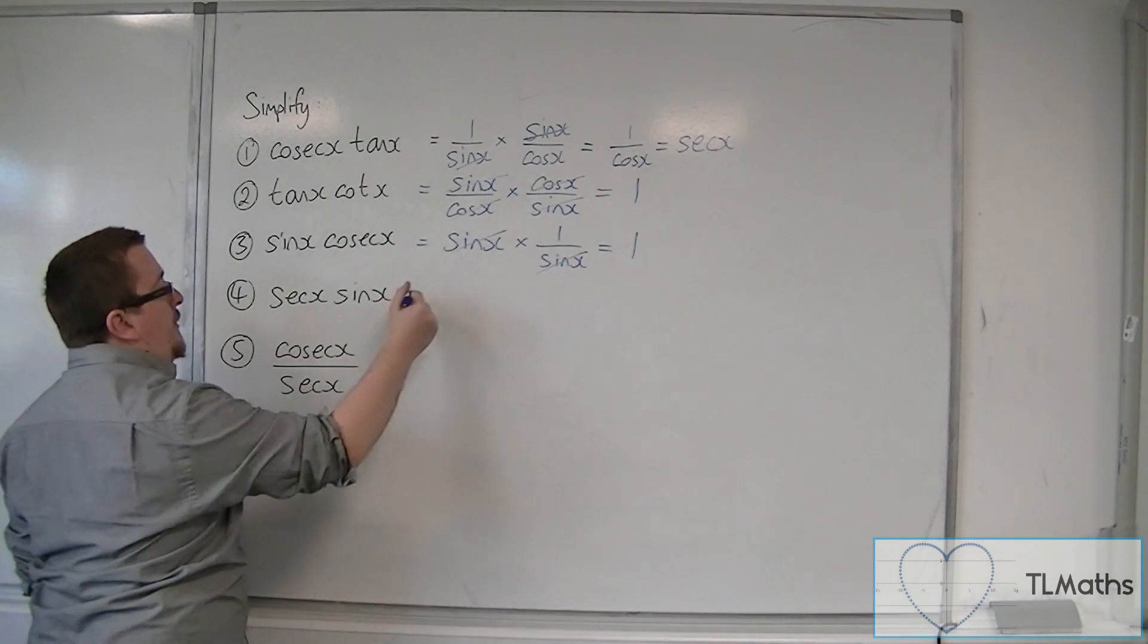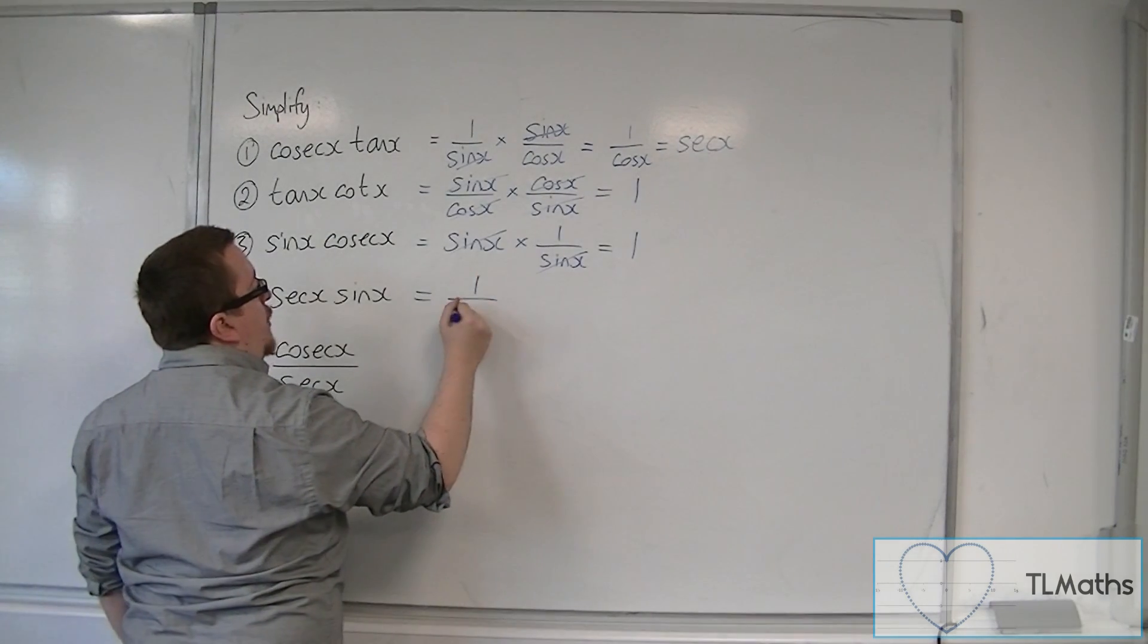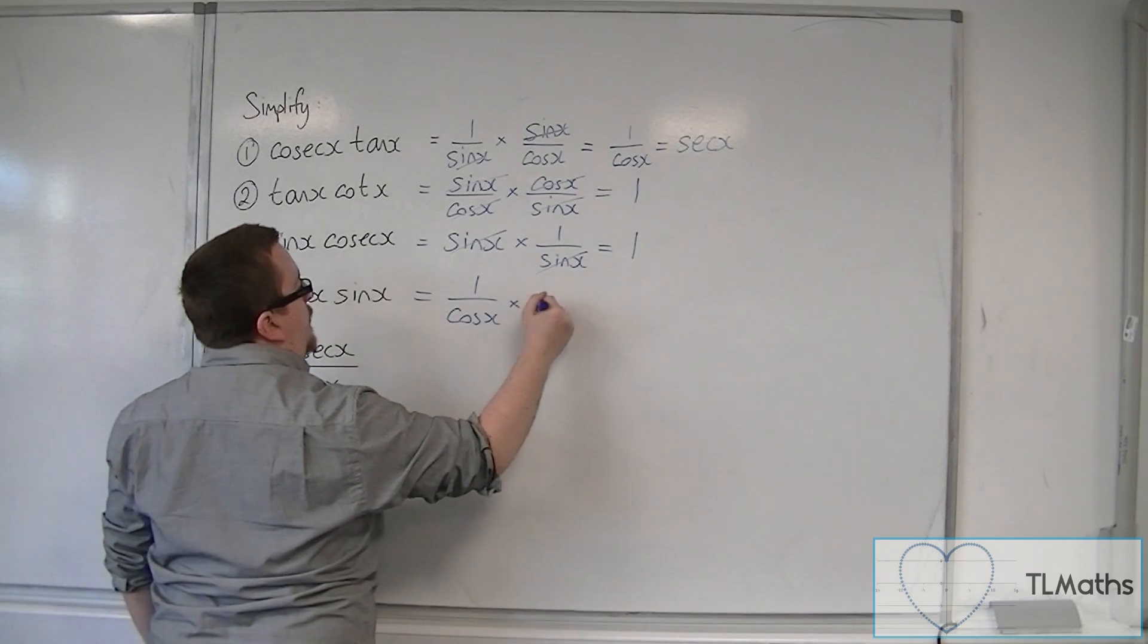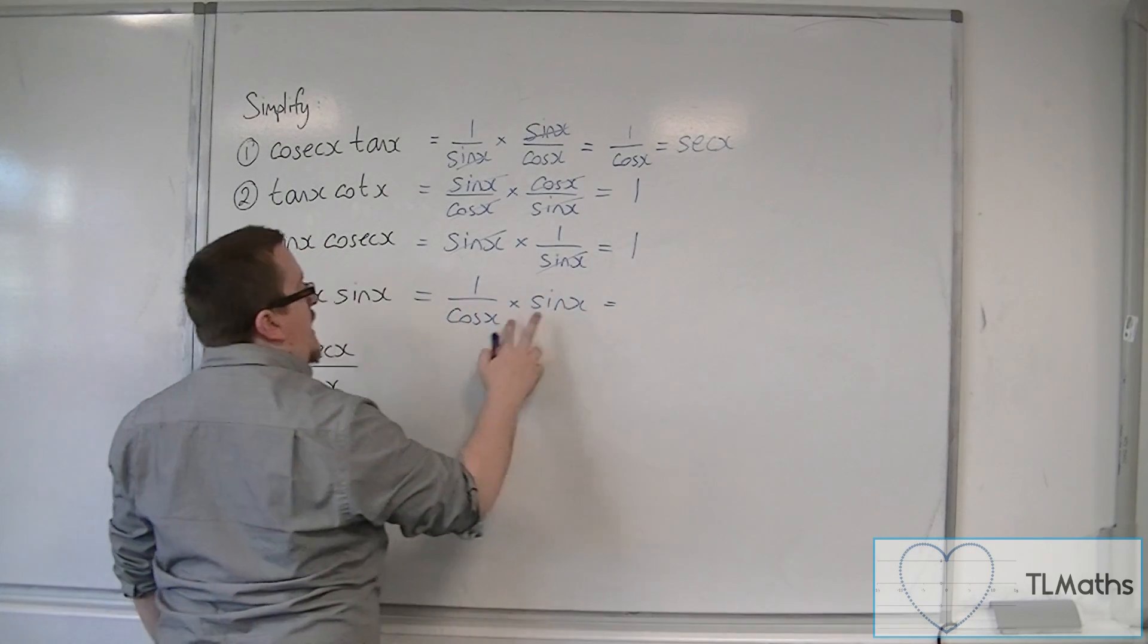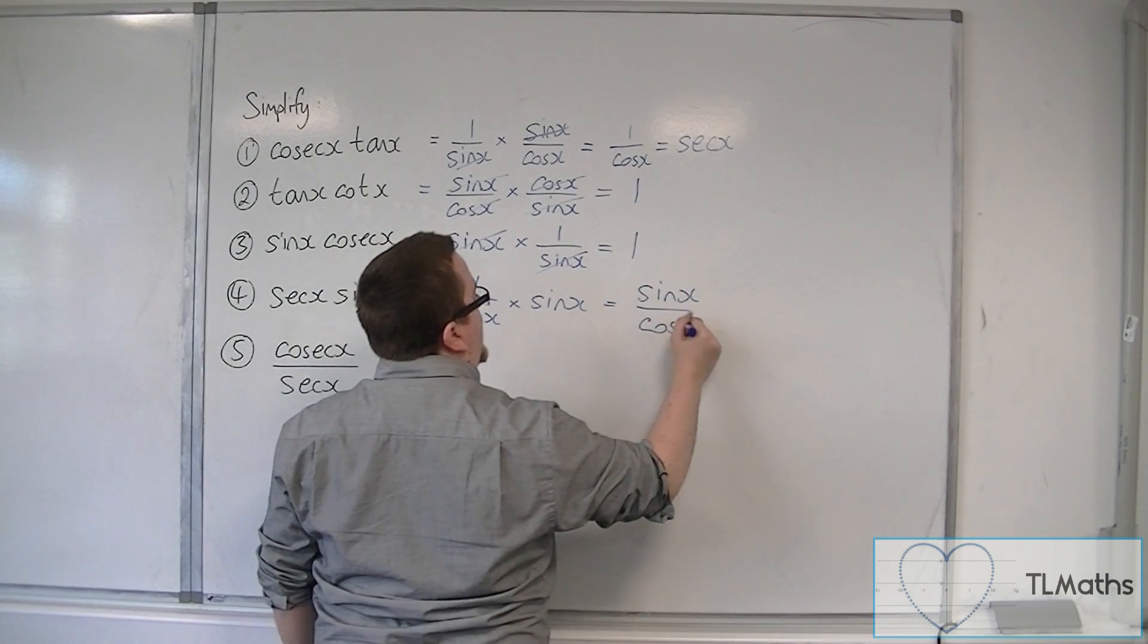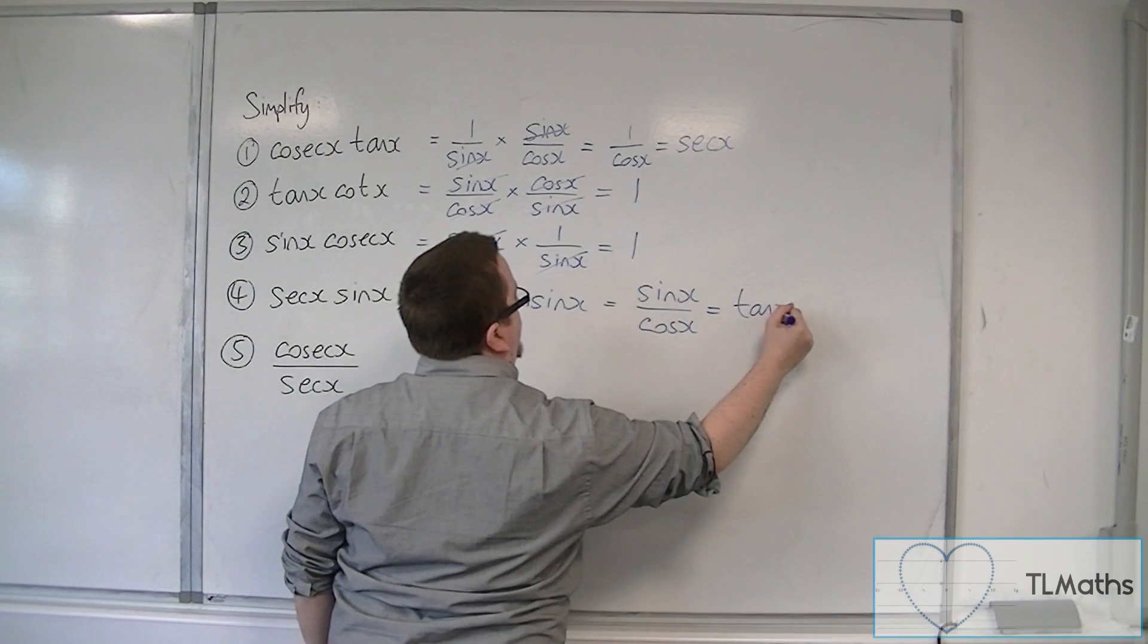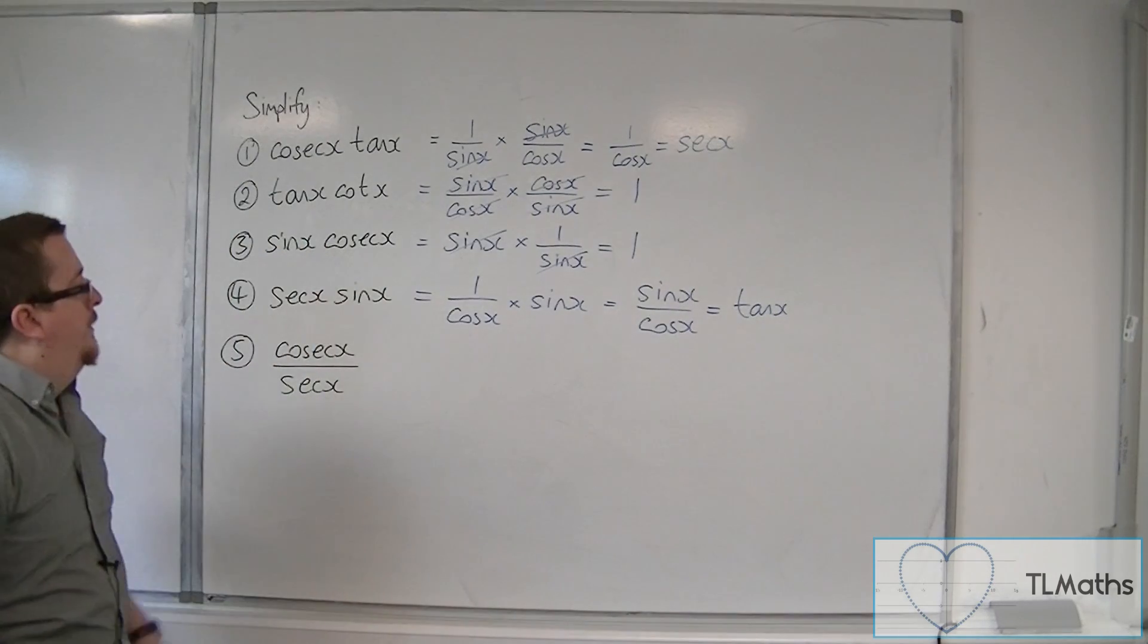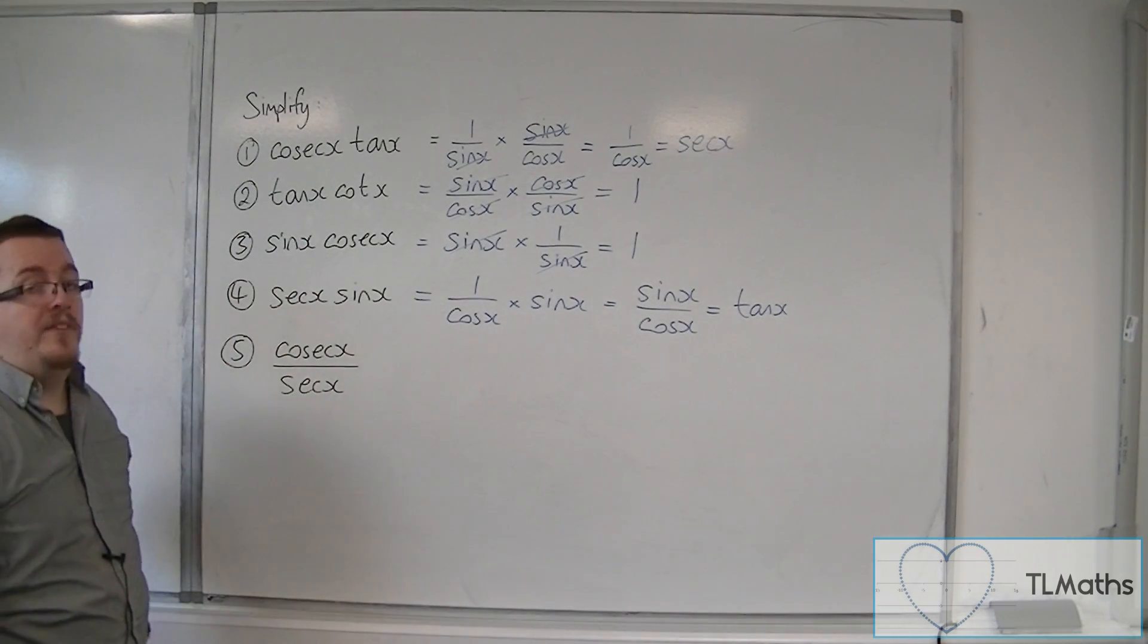Sec x sine x. Well, sec x is 1 over cos times by sine. And so here we're just going to get sine x over cos x, which we know is tan. So sec x sine x is the same as tan x.